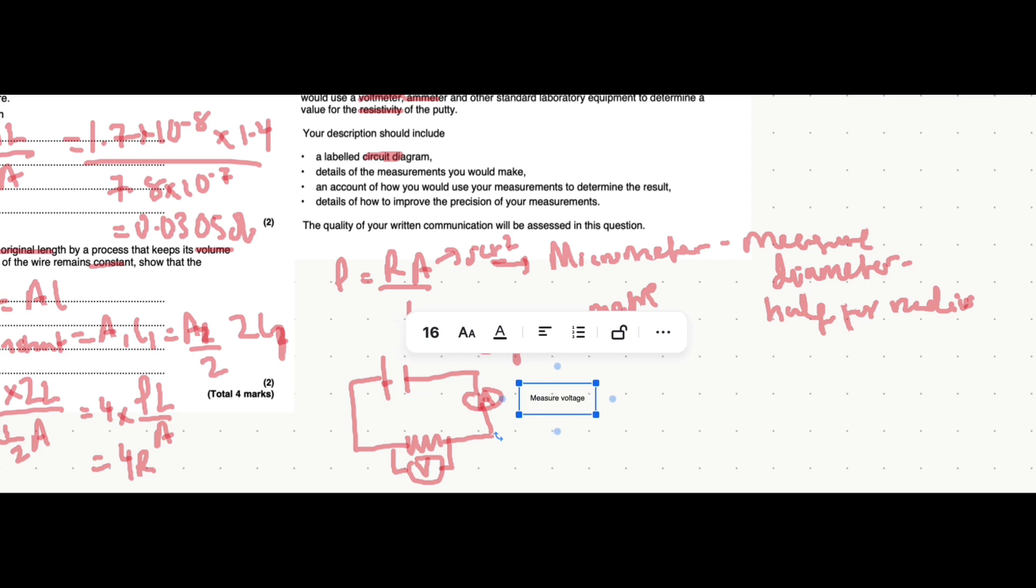Measure voltage against current. Oh, but you'd also want to measure it at various different values. So, you might want to also put a variable resistor in. What that will do, you can change the resistance. And, actually, no, you don't even need to do that. Once you measure the voltage and current,